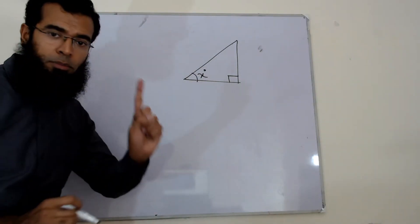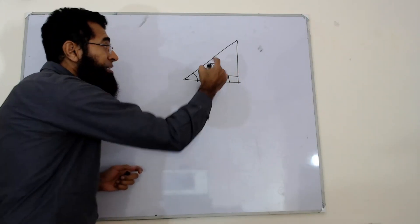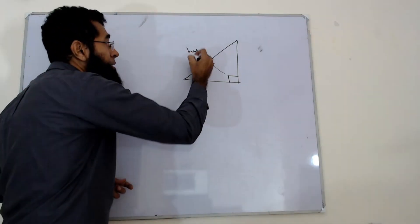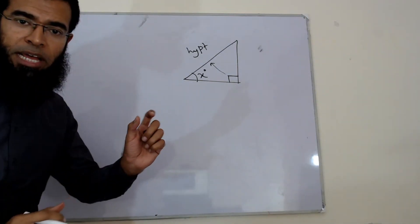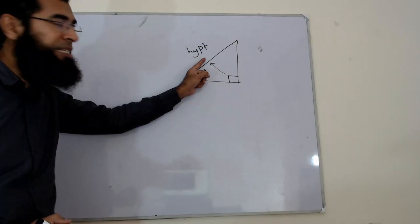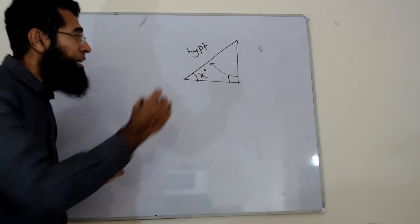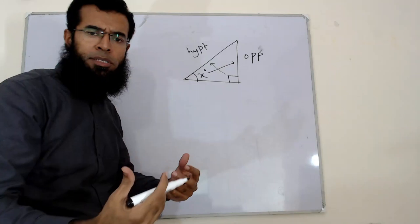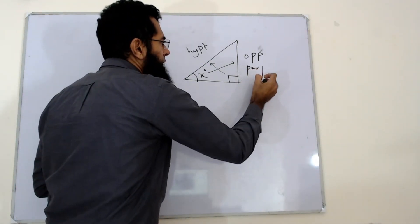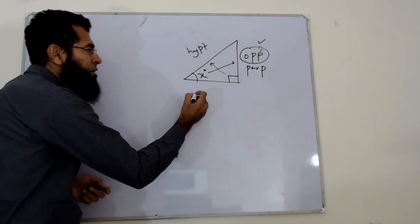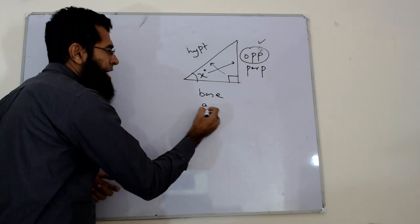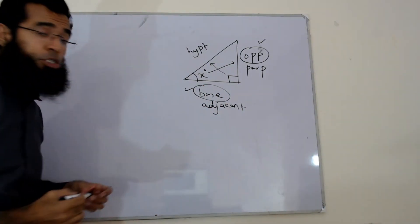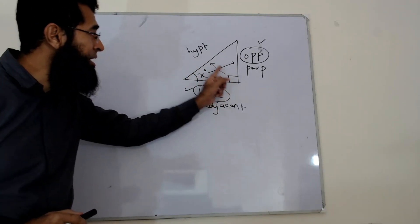Number one: the 90 degrees opposite side is always the longest side of a right angle triangle, which is called the hypotenuse. The 90 degrees opposite side is always the hypotenuse. The angle that is given to you — the side opposite to that angle you label as opposite. In some books they use the letter 'perpendicular', but we'll use 'opposite'. The remaining side is the base — in some books 'adjacent' is used, but we'll use 'base'.